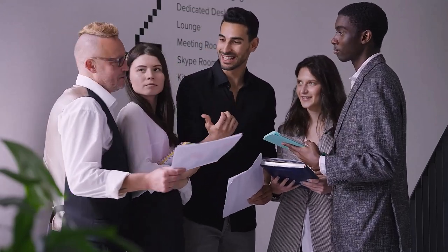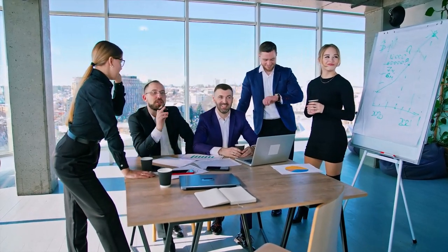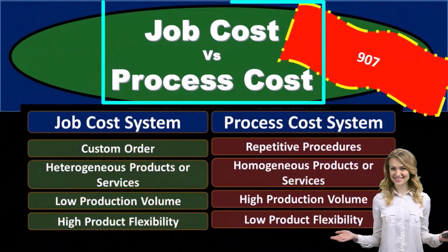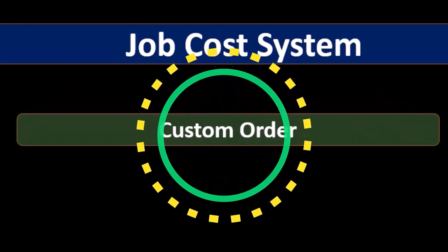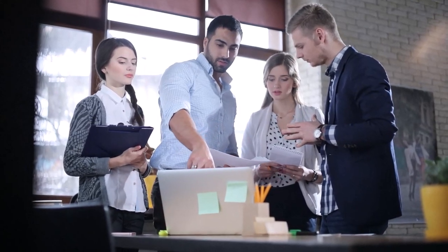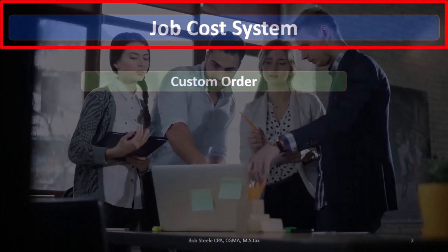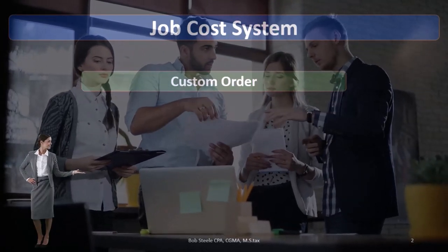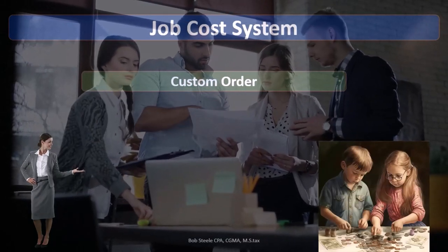When we produce inventory as a manufacturing company, we will typically use either a job cost system or a process cost system. The difference between these two — which one we use — will typically depend on the type of inventory that we produce. As we work through problems of a job cost system and process cost system, we'll see why these characteristics of inventory will distinguish which system we choose.